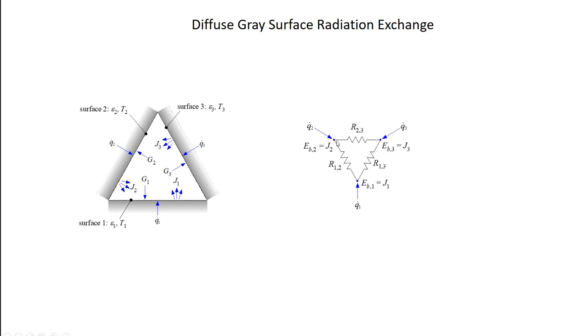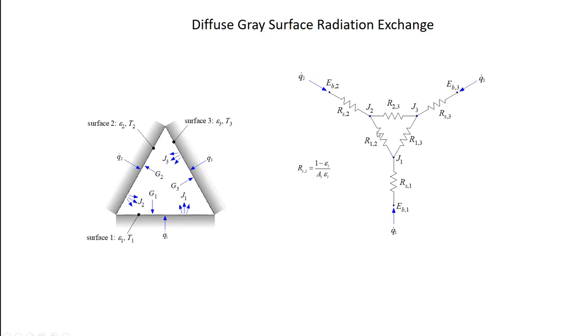The network looks pretty much the same on the inside where the radiosities are connected. What I've done is I've added surface resistors to each surface. That takes me from the black body emissive power of the surface to the radiosities. The radiosities still connect the way they did before, but I have this additional resistor that is 1 minus epsilon over A times epsilon.